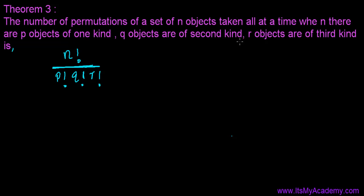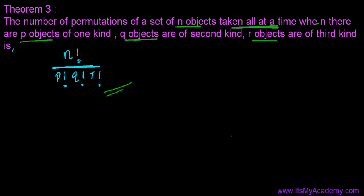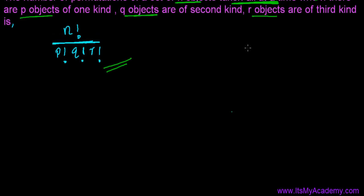Here I have the third permutation theorem, and this is very conceptual and very important. Please pay full attention. The theorem states: the number of permutations of a set of n objects taken all at a time, when there are p objects of one kind, q objects of a second kind, and r objects of a third kind, is n factorial divided by p factorial, divided by q factorial, divided by r factorial. This is a little difficult to understand, but an example will clear your doubt.